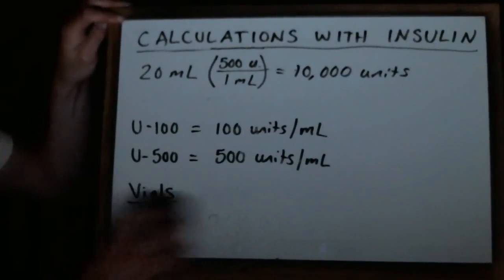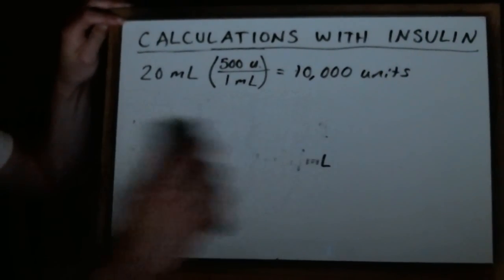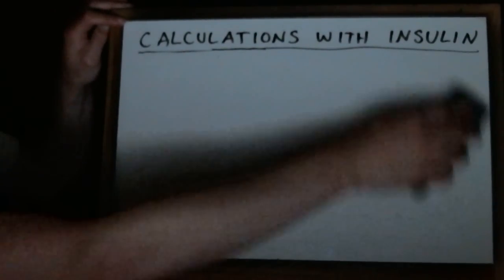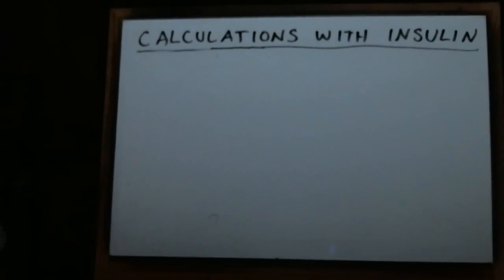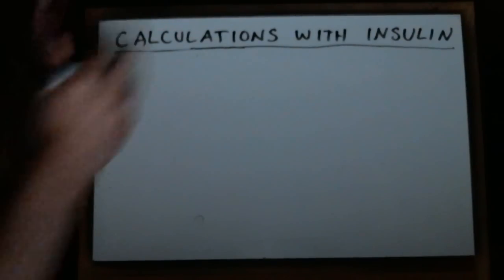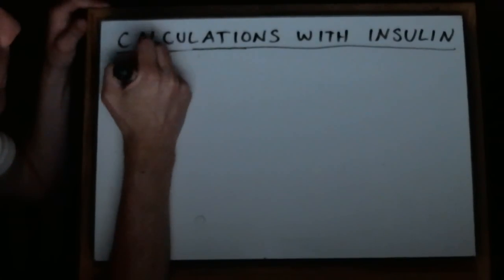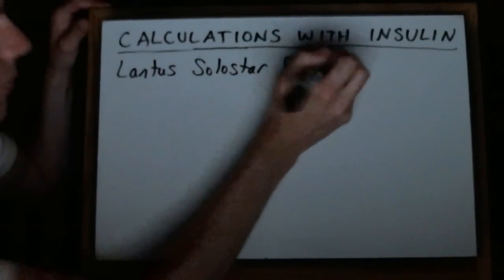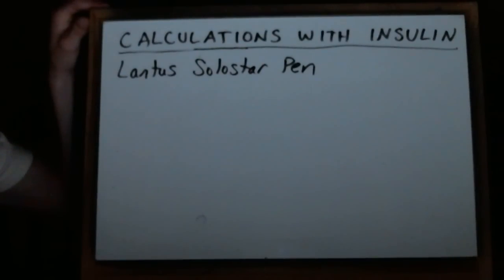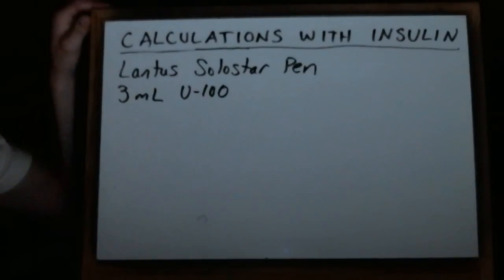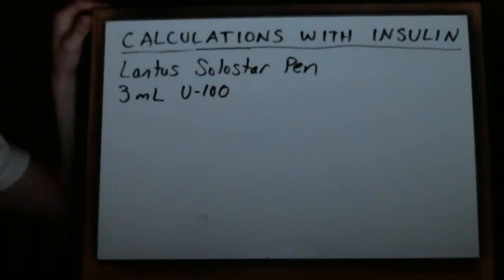Another calculation especially important to the community setting nowadays is calculating the correct day supply, and that can be tricky with insulin. It can be really tricky with insulin pens. The example I'm going to use right now deals with Lantus Solostar pen. These pens are three mL each of U-100 insulin and you get five pens in a box.